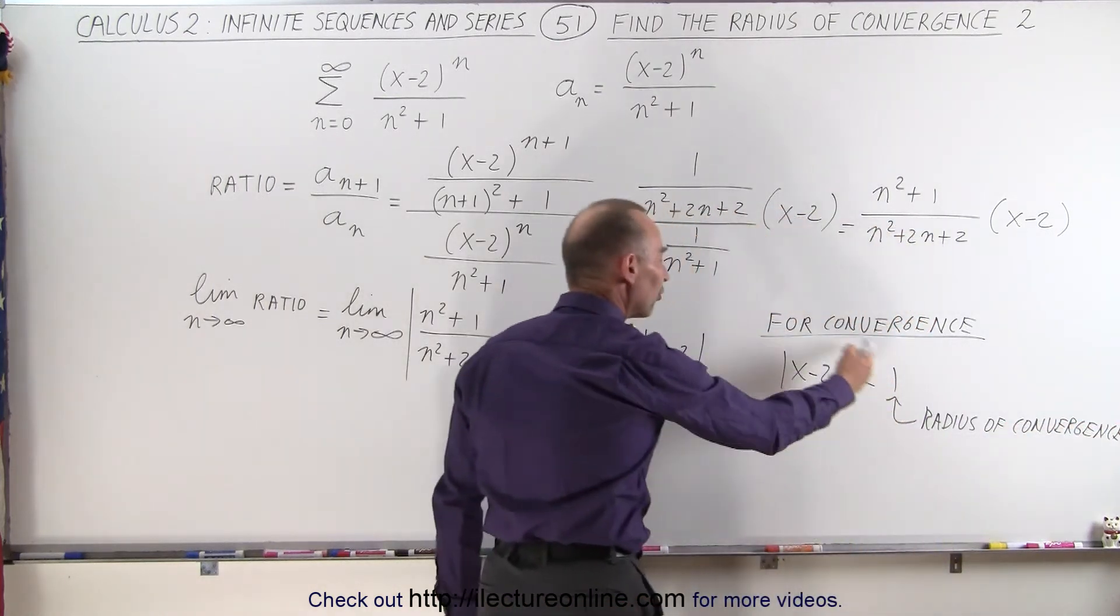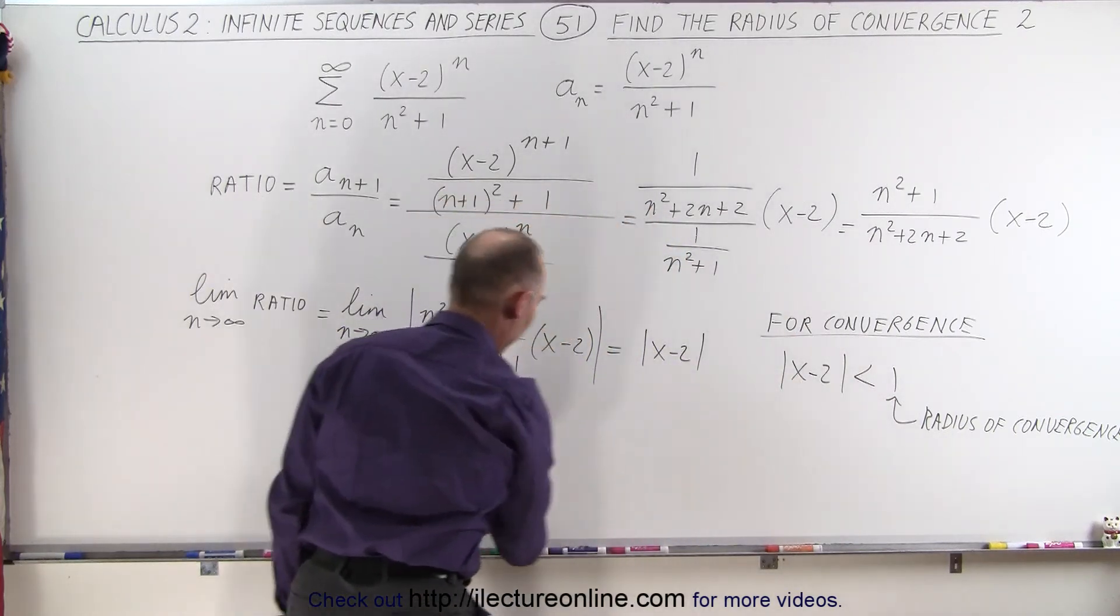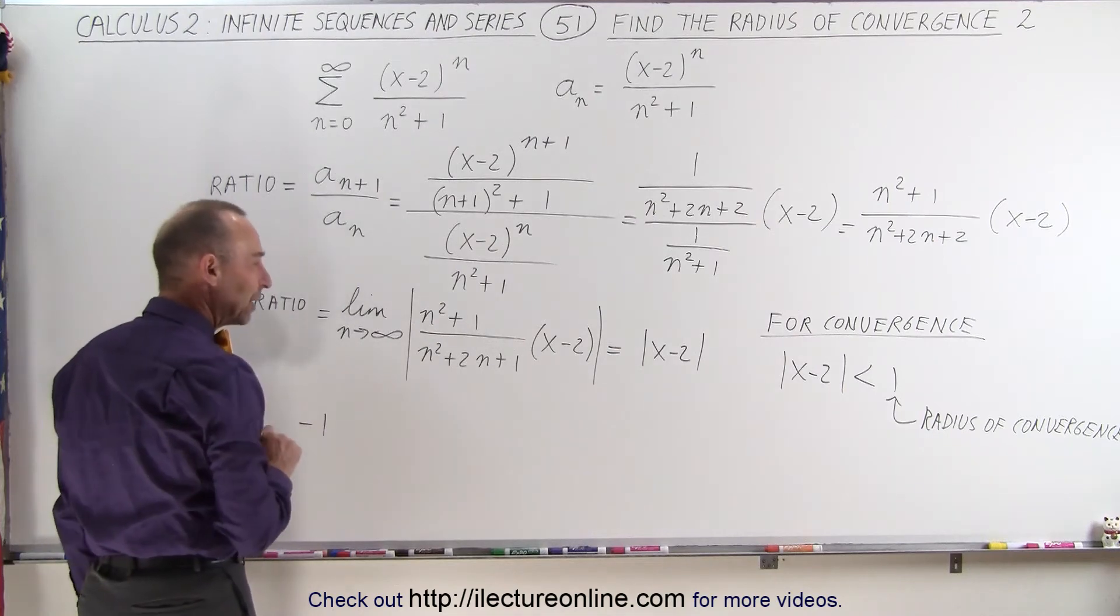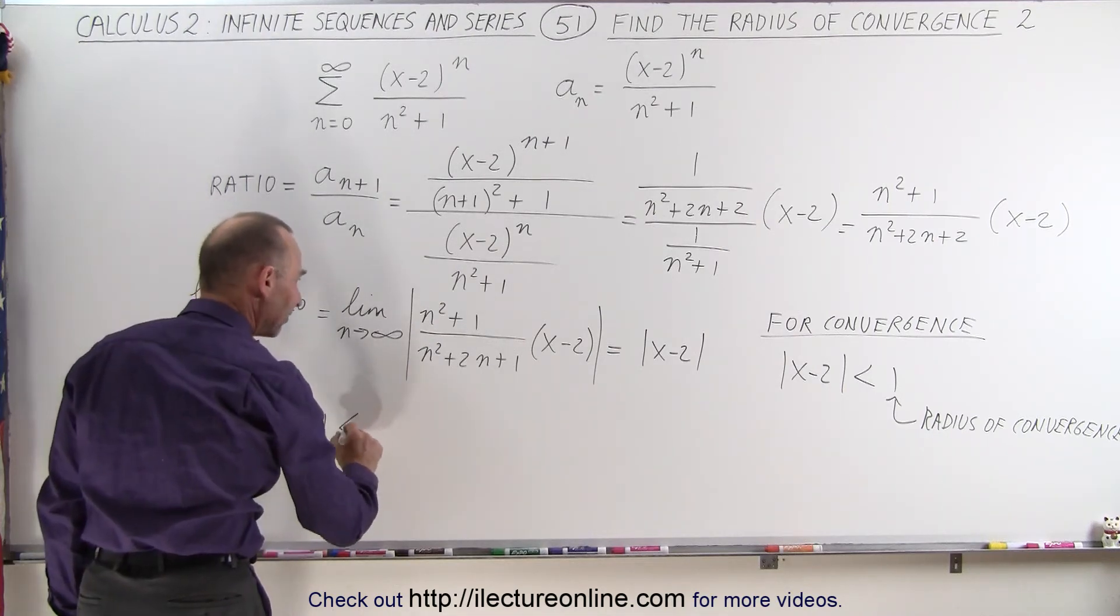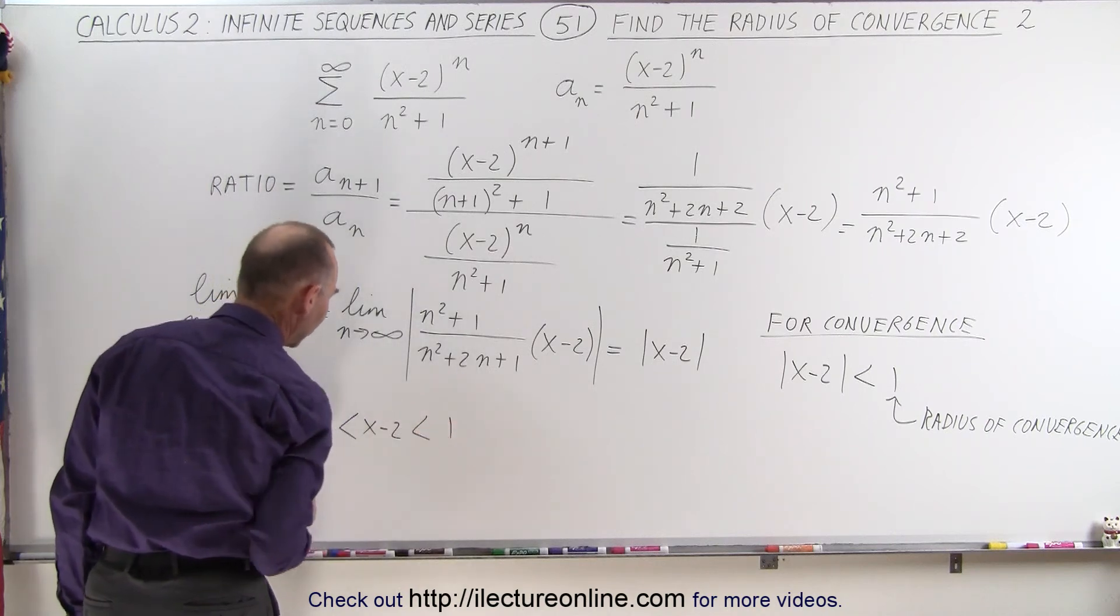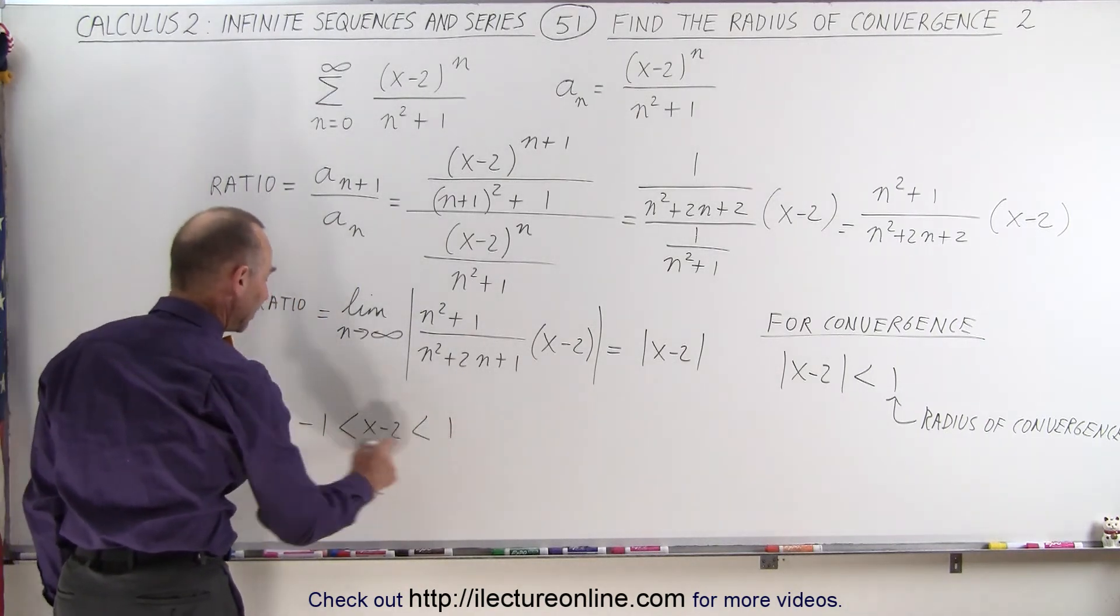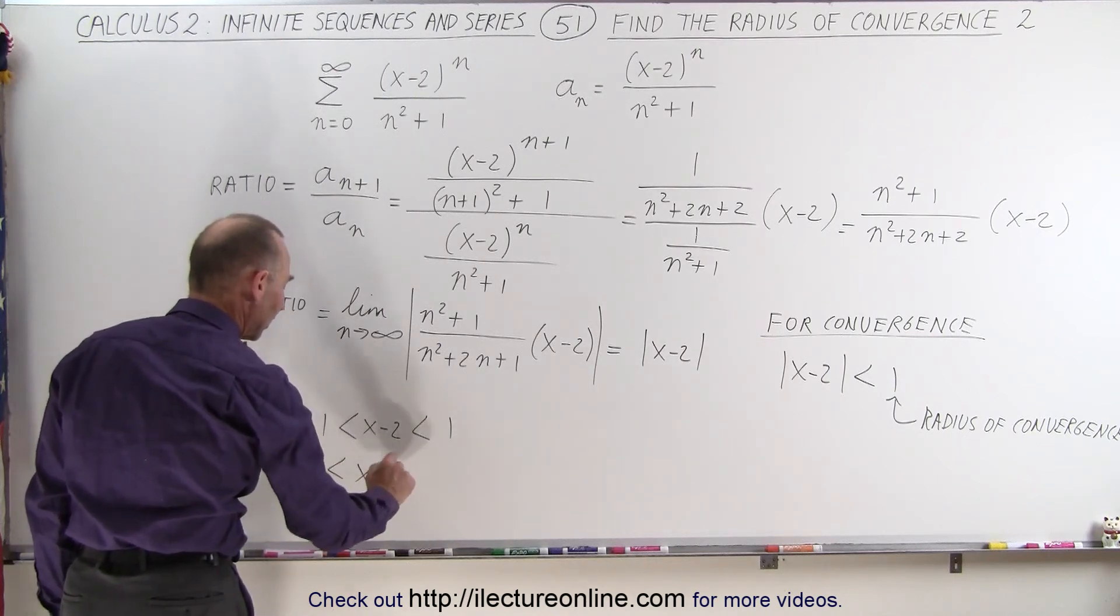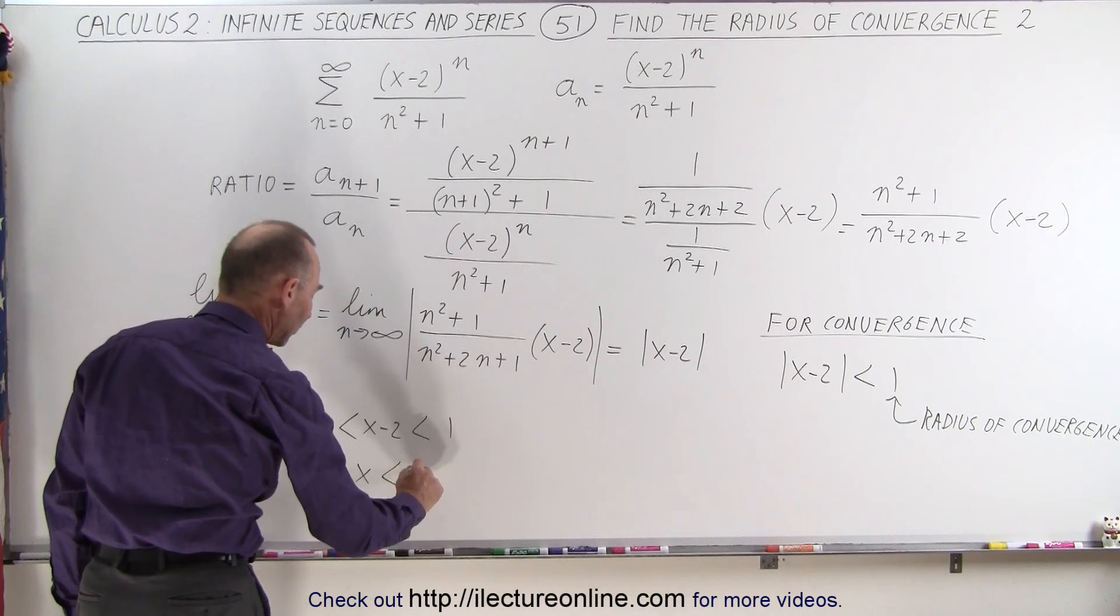If we solve this for x, we get minus 1, the negative of that radius of convergence, is less than x minus 2, which is less than positive 1. If we add 2 to every component here, we get 1 less than x less than 3.